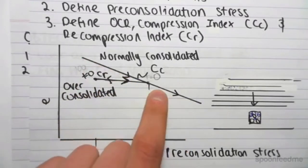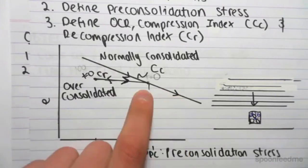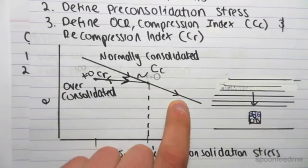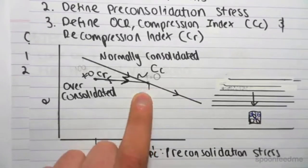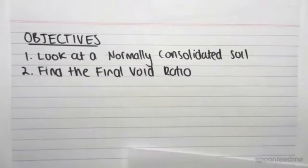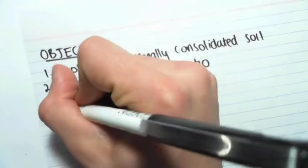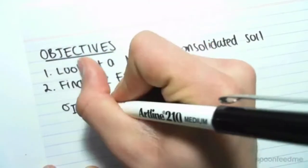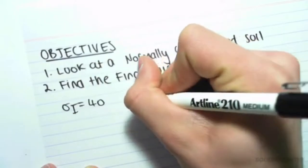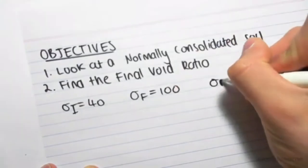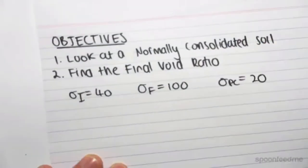So in other words, we're now experiencing stresses which are greater than our pre-consolidated stress. We're at a time where our stresses are greater than the pre-consolidated stress. For example, we could be given sigma initial equals 40, sigma final equals 100, and sigma pre-consolidated equals 20.